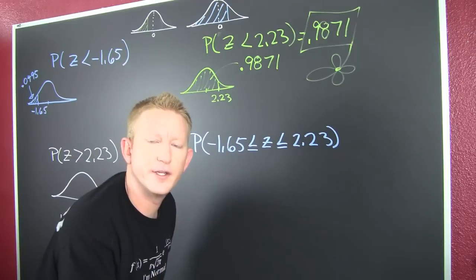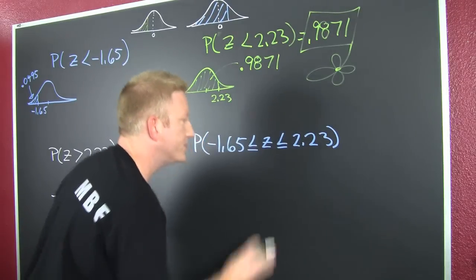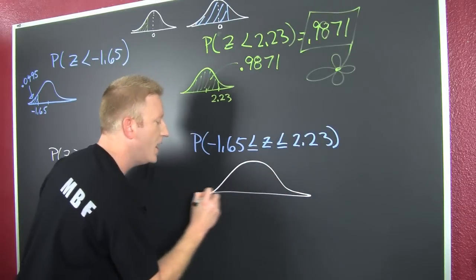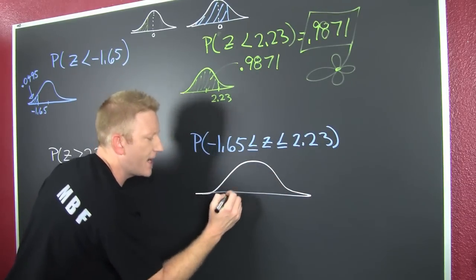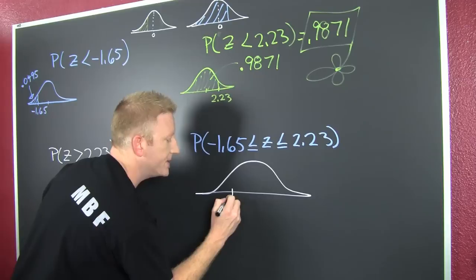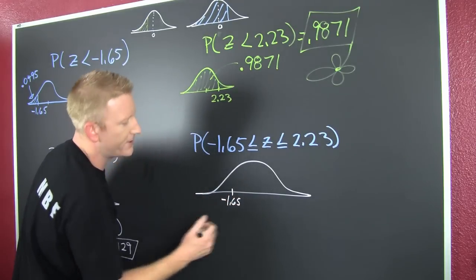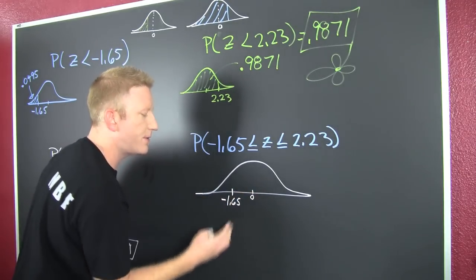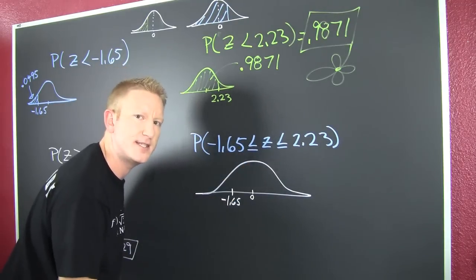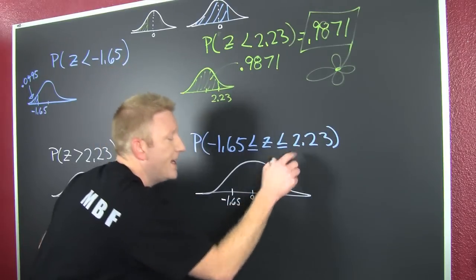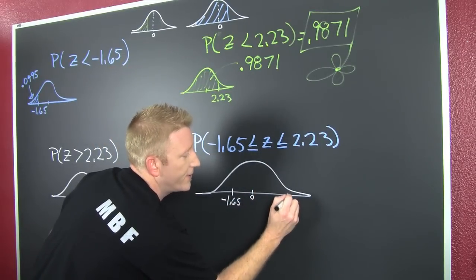So now we're looking for the probability in between two values. I'm taking a look at these two values. I value this normal curve where I see one of them is on the left side, that's right here - that's minus 1.65. And maybe it's a little bit further that way because we know we're centered around zero and it's three standard deviations to either side. Of course it keeps going, but that's unlikely.